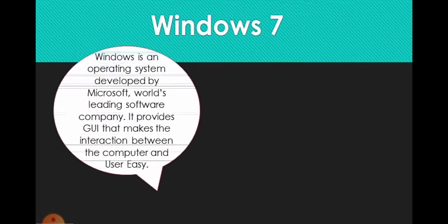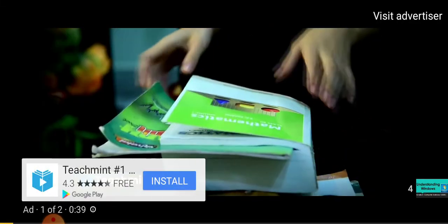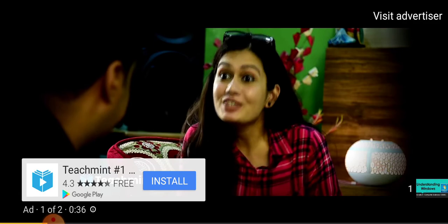Windows 7 is better than other versions of Windows in terms of functionality. It is more user-friendly. Windows is an operating system developed by Microsoft, the world's leading software company. It provides a GUI that makes interaction between the computer and the user easy.